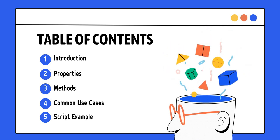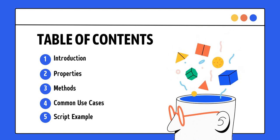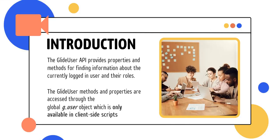These are the table of contents which we will go through in this video. If you want to jump to a specific topic, the links are given in the description. First, the introduction: the Glide User API provides properties and methods for finding information about the current logged-in user and their roles. Glide User methods and properties are accessed through the g_user object, and most importantly, it is available only on client-side scripting.